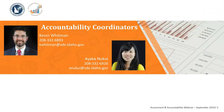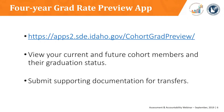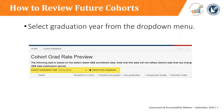Now I'll turn things over to Ayaka to talk about grad rate. Hi everyone, this is Ayaka. The four-year cohort graduation rate preview application is open — it's actually open all year long. You can view current and future cohort members as well as submit supporting documentation for transfers. If you haven't checked that for a long time, I would recommend going to check it. In the application, you can select the graduation year from the drop-down menu to select future cohorts.